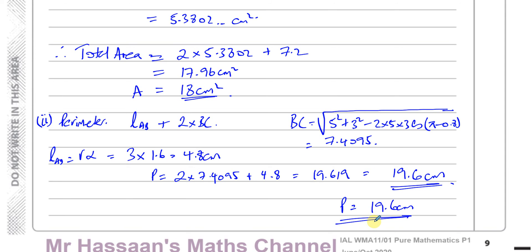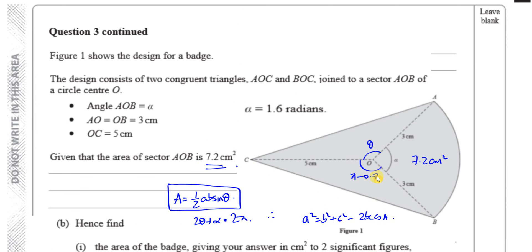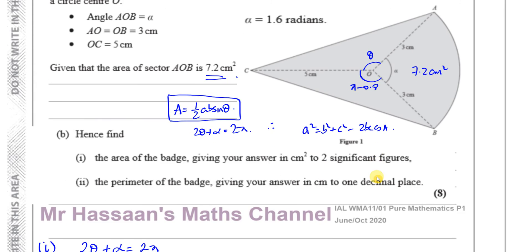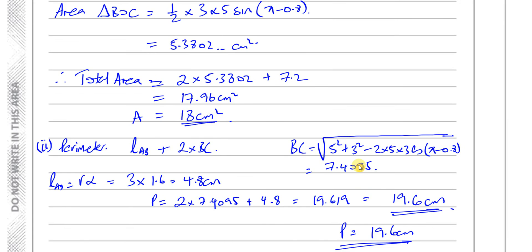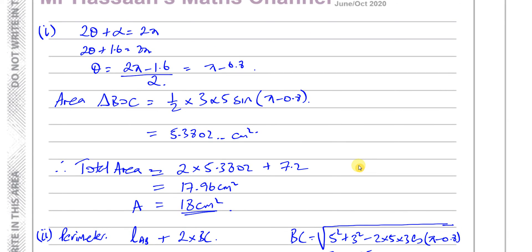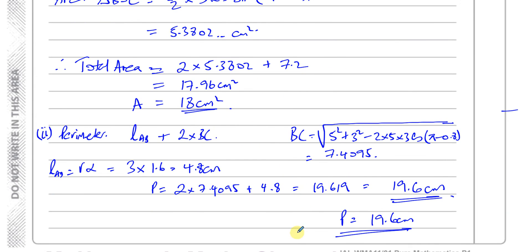That's the answer to question number 3 — a pretty simple question on radian measure, areas and perimeters. Other questions from this paper are in the playlist. Other questions on radian measure are in the playlist over here. You can subscribe by clicking the icon, and a card at the top takes you to another P1 paper. Thank you for watching, and see you soon.